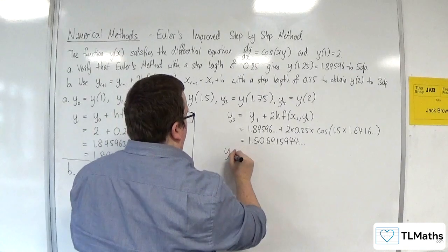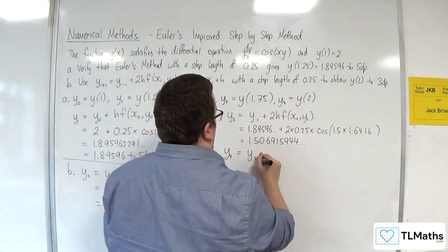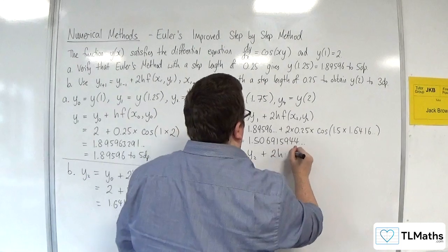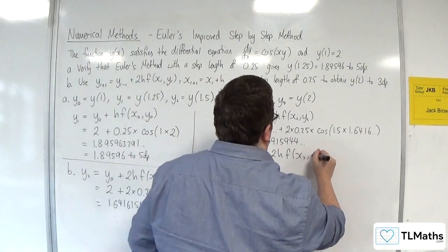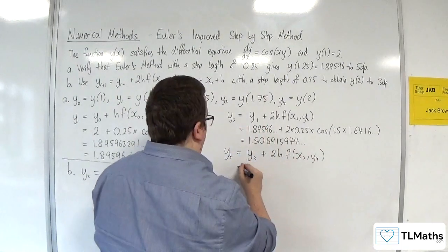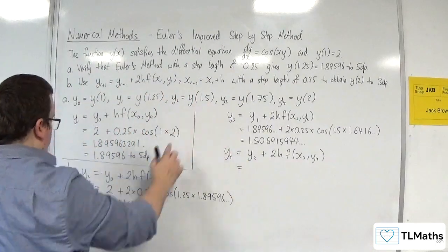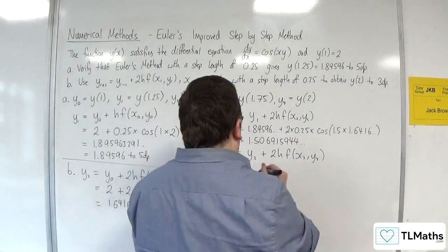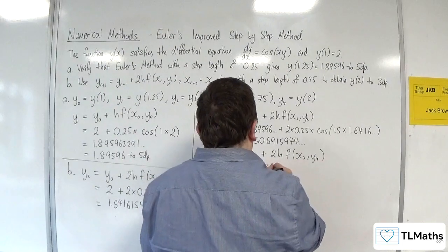So y4, the one I want, is y2 plus 2h times f of x3, y3. Now y2, y of 1.5, was 1.6416, etc.